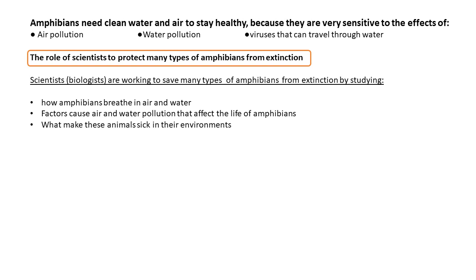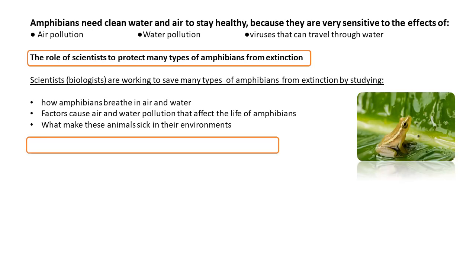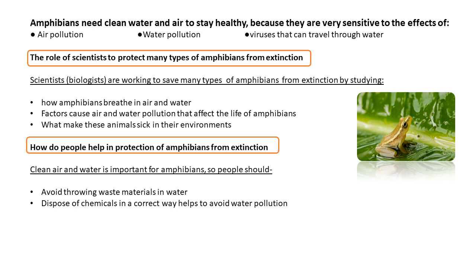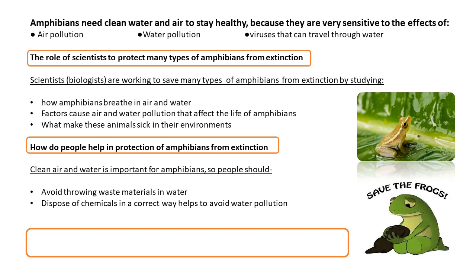The role of scientists is to protect many types of amphibians from extinction. Scientists or biologists are working to save many types of amphibians — like the golden toad — by studying how amphibians breathe in air and water, the factors causing air and water pollution that affect their lives, and what makes these animals sick in the environment. People can help by avoiding throwing waste materials in water and disposing of chemicals correctly to avoid water pollution. Note: 90 species of amphibians have become extinct in the last 20 years, in addition to 124 other endangered species.